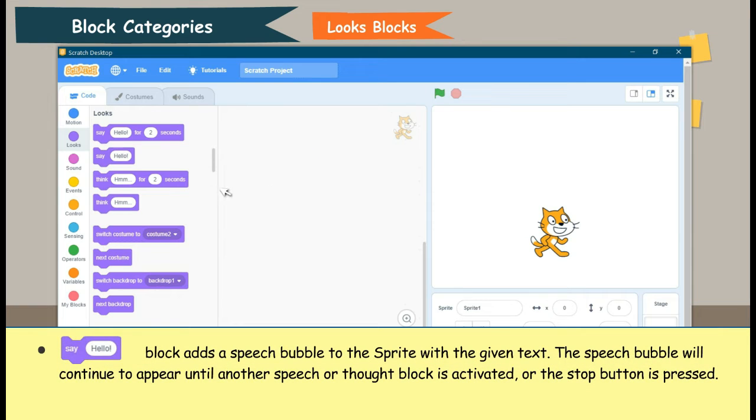Say Hello block adds a speech bubble to the sprite with the given text. The speech bubble will continue to appear until another speech or thought block is activated or the stop button is pressed.